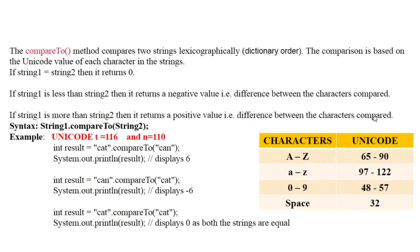The syntax for compareTo is: string1.compareTo(string2). Let us compare 'cat' and 'can'. When these two strings are compared, it will return either a positive value, a negative value, or zero. Since it returns an integer, I have taken a variable called result with data type int. Now let us compare lexicographically character by character.